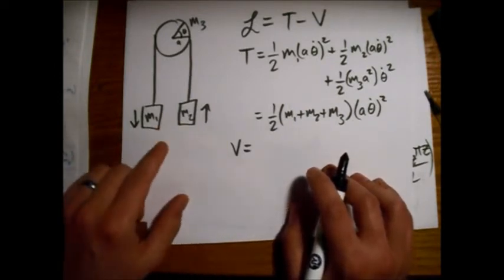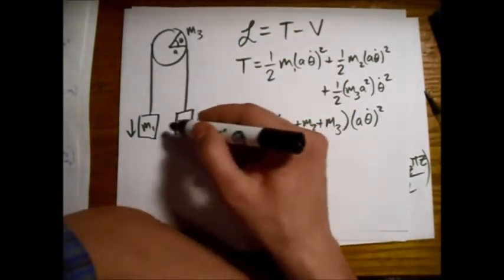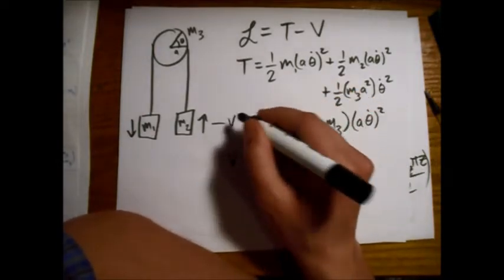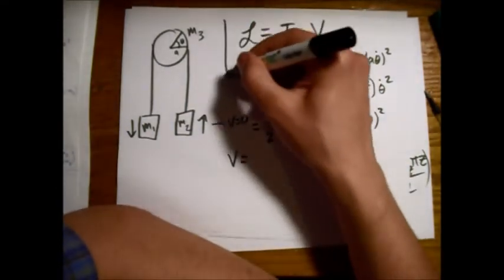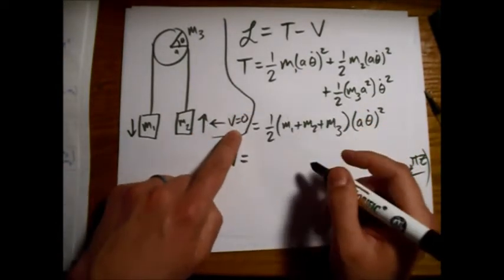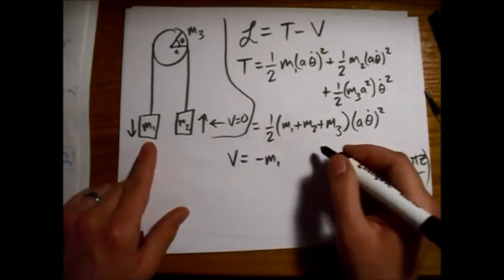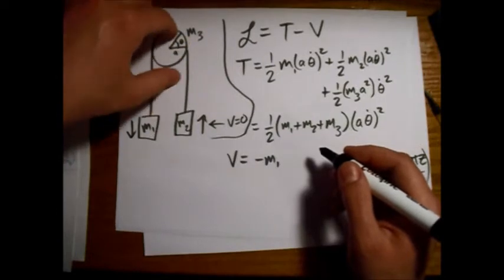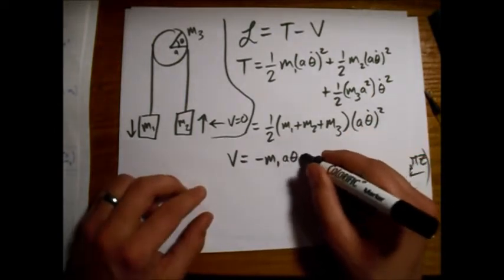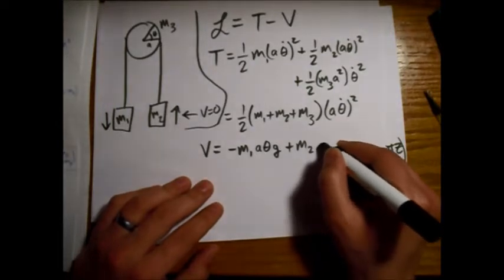If we set some zero point along here, we'll have this level right here has the potential energy equals zero. So we'll have potential energy is minus m1 times the distance of this section of arc that the wheel turns, which is a theta. And that's times g, acceleration due to gravity. And the other one's going in the other direction. So it's a plus sign, m2, a, theta, g.